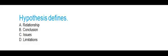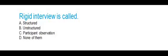A hypothesis is defined as: relationship, conclusion, issues, or limitation. The correct answer is relationship. A rigid interview is called: structured, unstructured, participant observation, or none of them. The correct answer is structured — a rigid interview is called a structured interview.